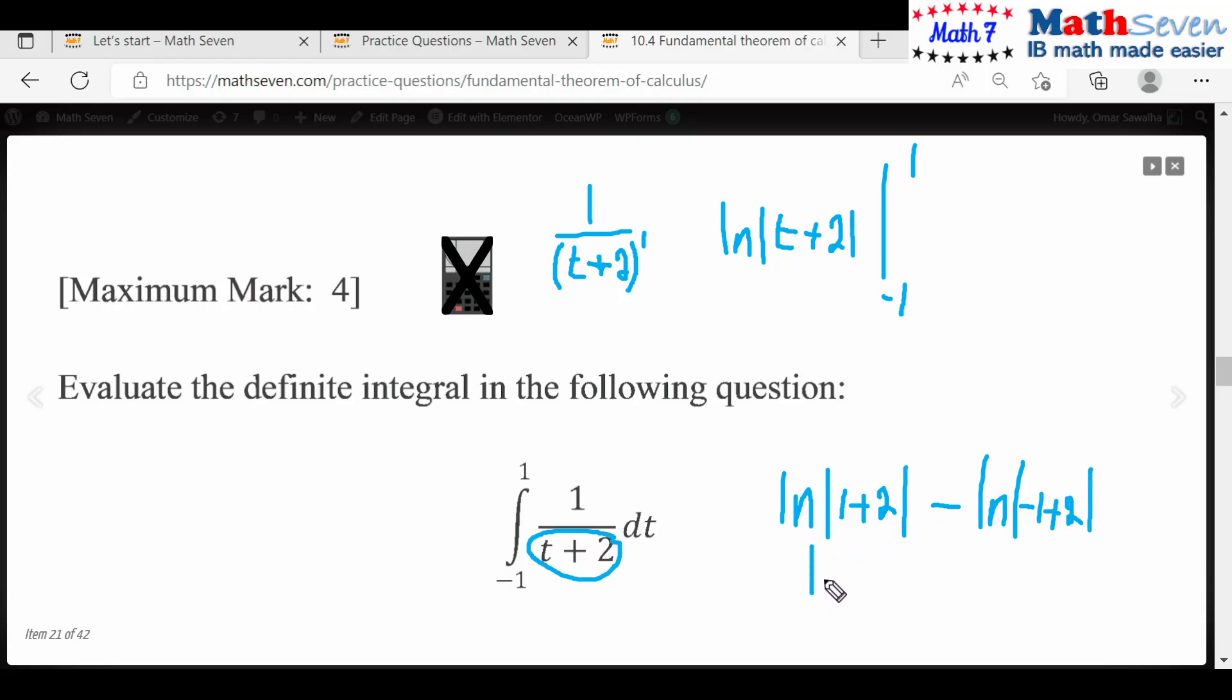One plus two is three, which is ln three. The absolute value becomes without absolute value because three is already positive. Minus one plus two is ln one. Well, ln one of course is zero, so the answer is ln three. Straightforward question. Let's check the mark scheme.